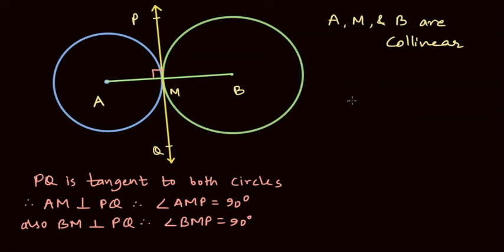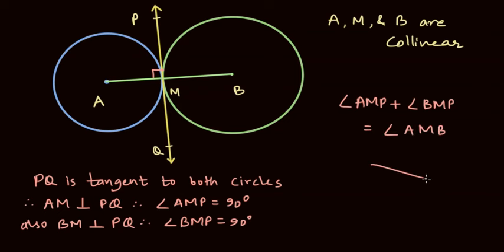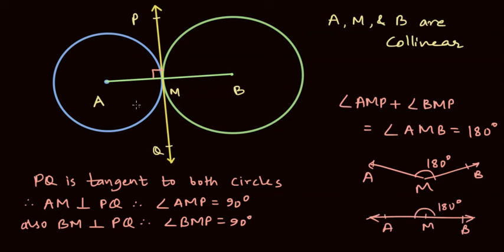Now, what is the sum of these two angles? Angle AMP plus angle BMP gives us angle AMB. Since both are 90 degrees, this angle must be 180 degrees. And if the angle AMB is 180 degrees, we must have a straight line. Therefore, all the points A, M, and B lie on a single line, and we have proved that points A, M, and B are collinear.